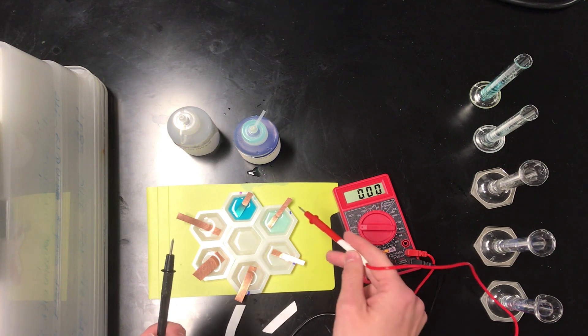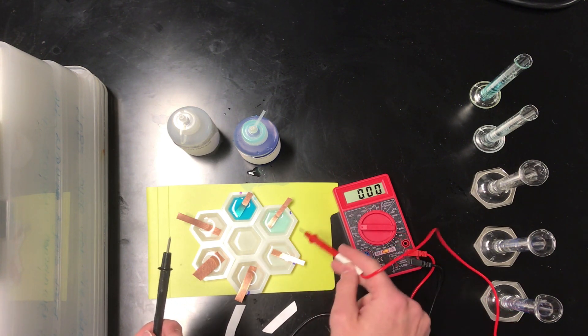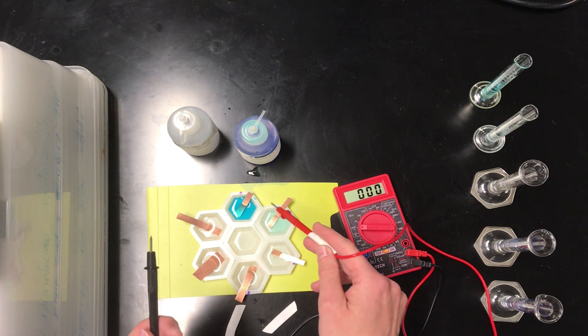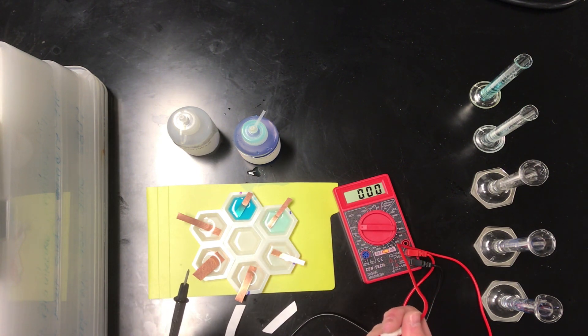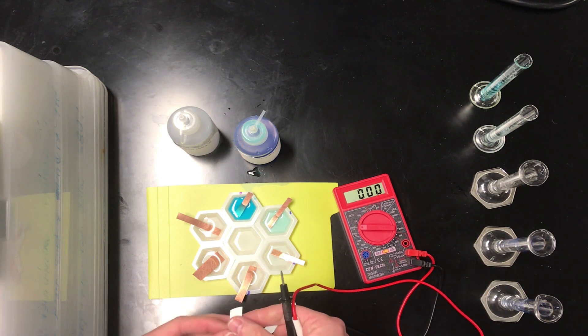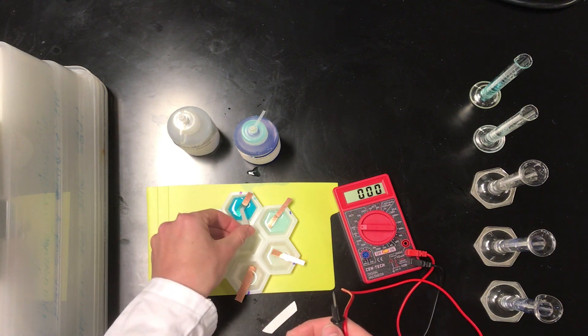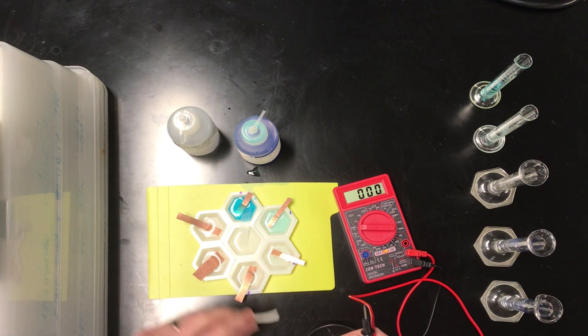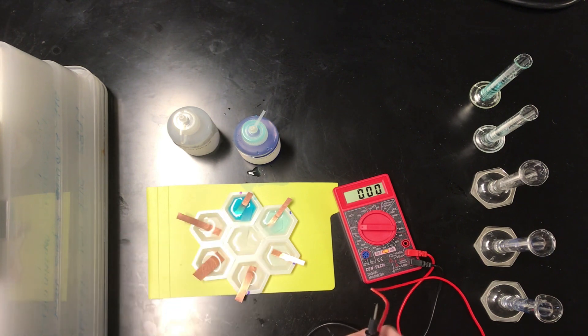Which direction do you think electrons will flow, from half cell 1 to half cell 0, or from half cell 0 to half cell 1? Okay, hopefully you've taken a moment to think about that, and I'm going to go ahead and connect the half cells via a salt bridge, and we're going to see if we can observe a voltage here.